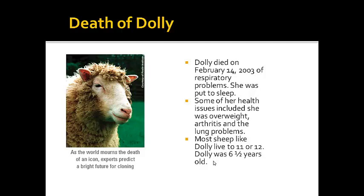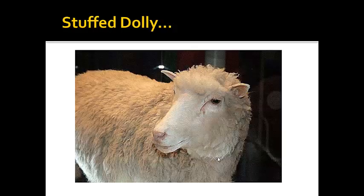Especially a sheep like Dolly — you don't just take the first cloned mammal and throw her out in the field to live like the other sheep. She was probably very well taken care of. But she only was six and a half years old when she died. So the question is, Dolly was probably closer in age to the original sheep she came from as opposed to when she was actually born. This is actually a picture of the stuffed Dolly.